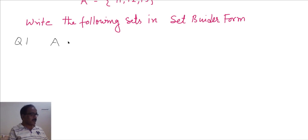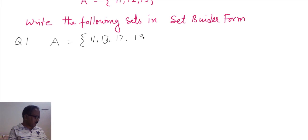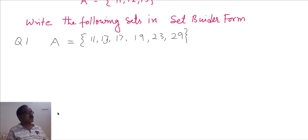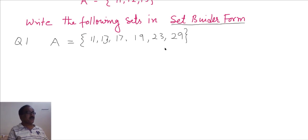Suppose A is a set: {11, 13, 17, 19, 23, 29}. Think — in set builder form you have to write only the property of this set. You have to mention the property belonging to these elements.